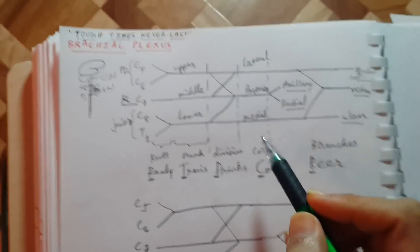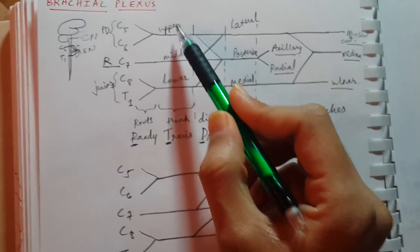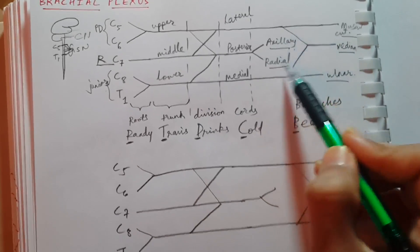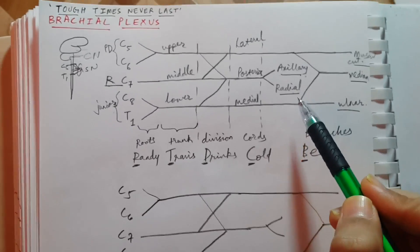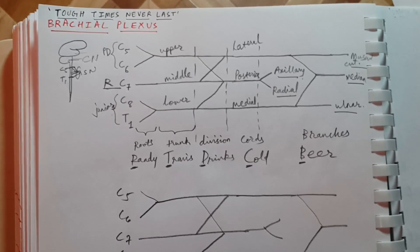That's the main introduction to brachial plexus. The important topics — injuries in the trunks, cords, and branches — will be discussed in another video.